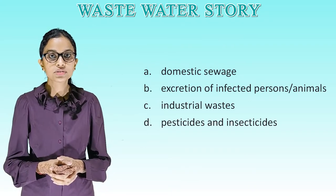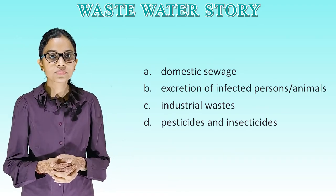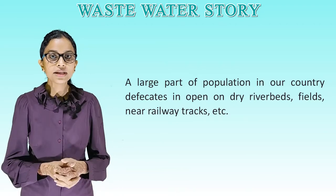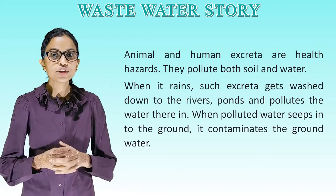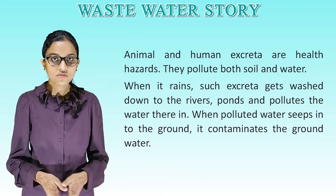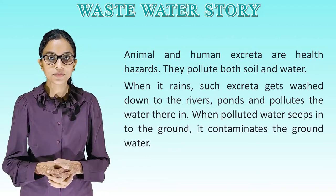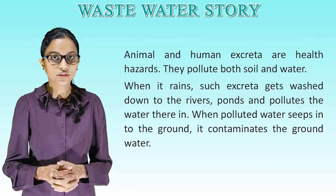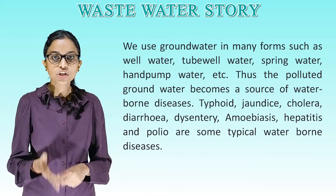Water also gets polluted by excretion of infected persons and animals, industrial waste, pesticides, and insecticides. A large part of the population in our country defecates in the open — on dry river beds, fields, near railway tracks, etc. Animal and human excreta are health hazards; they pollute both soil and water. When it rains, such excreta get washed into rivers and ponds. When polluted water seeps into the ground, it contaminates groundwater.